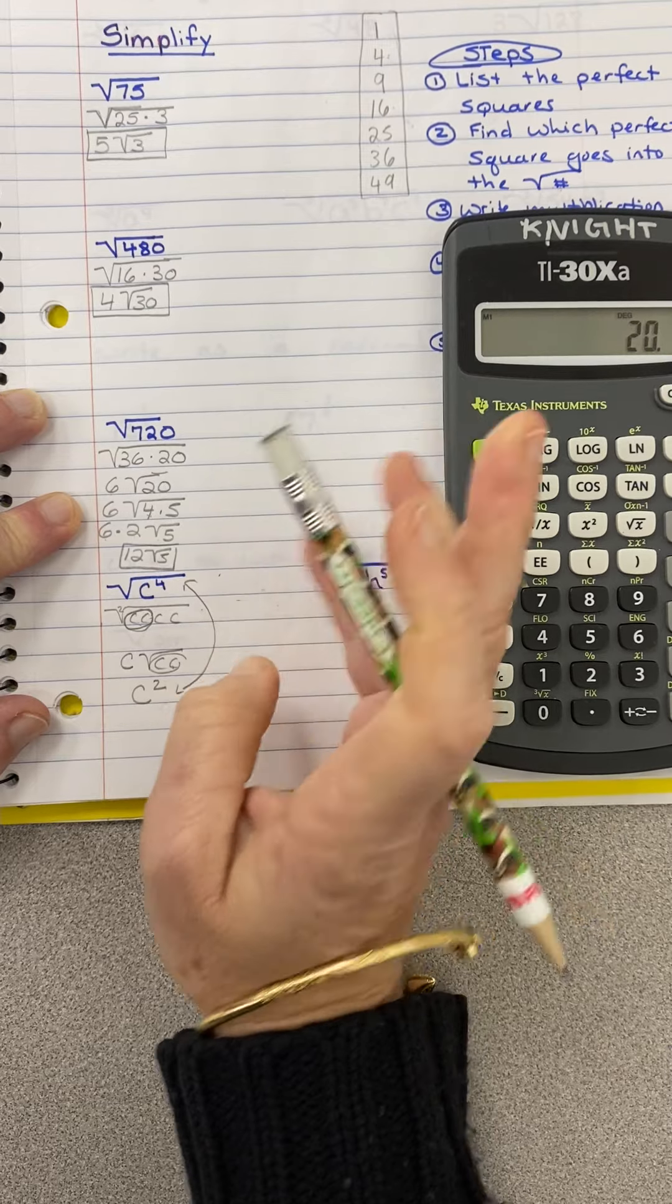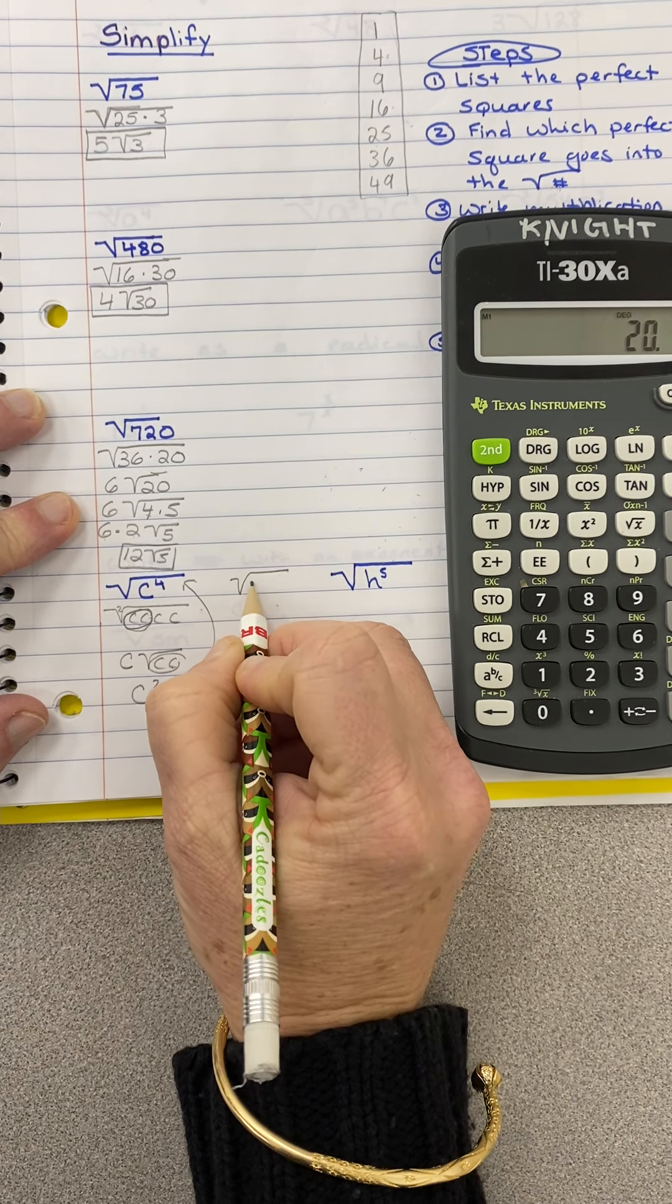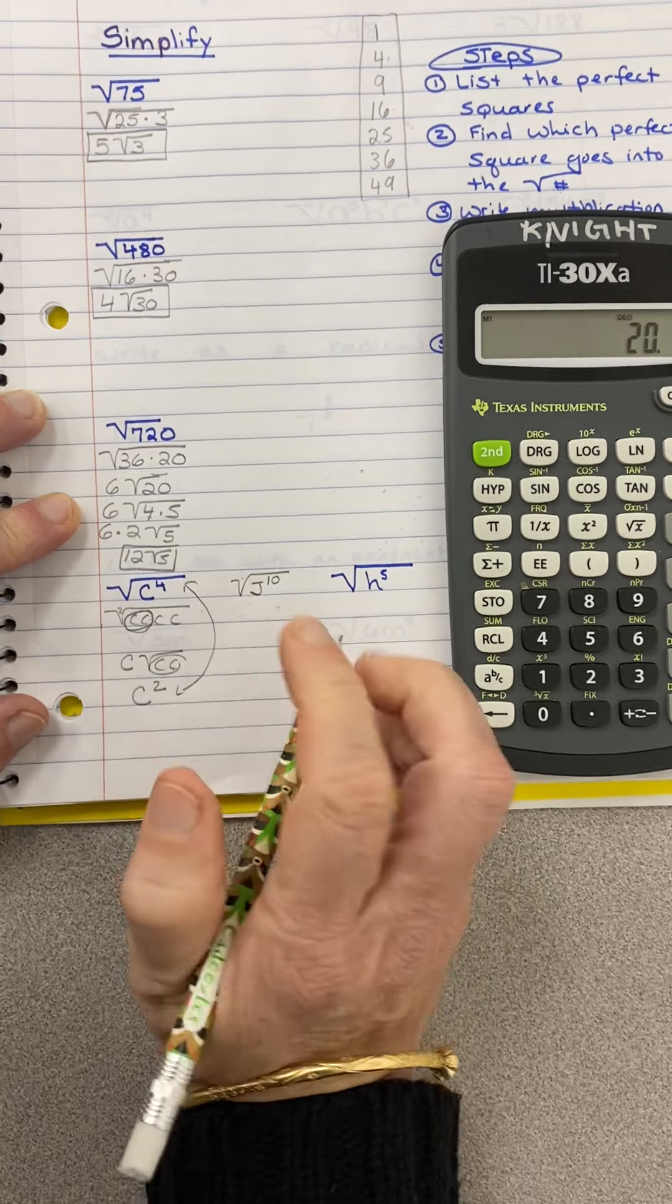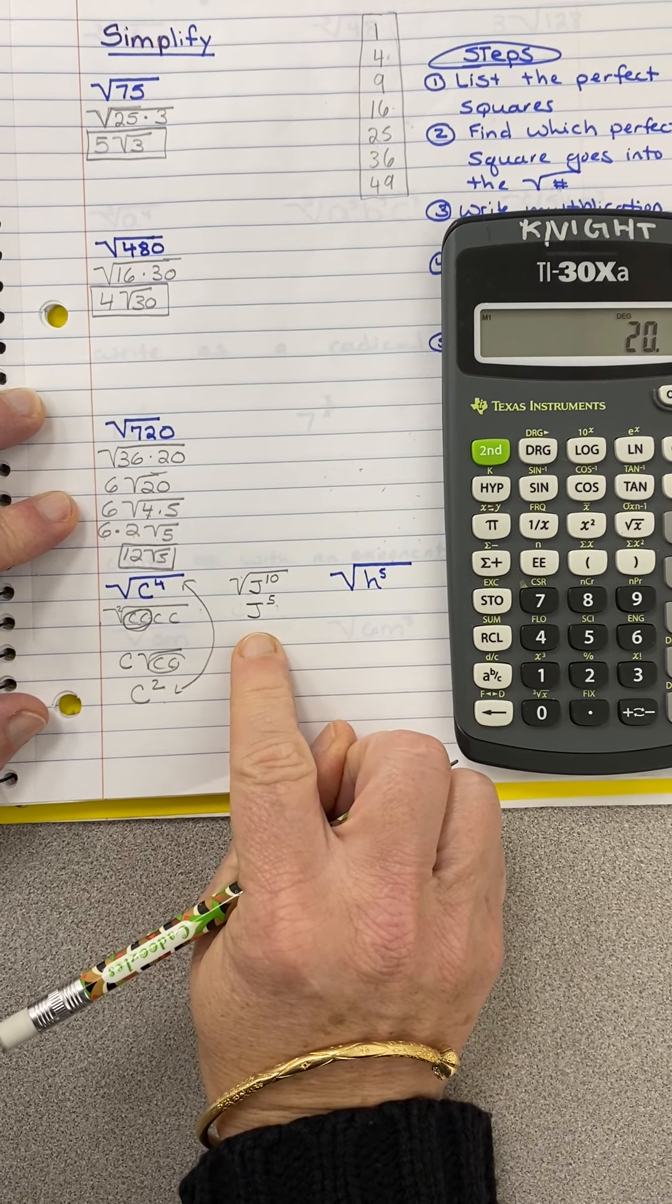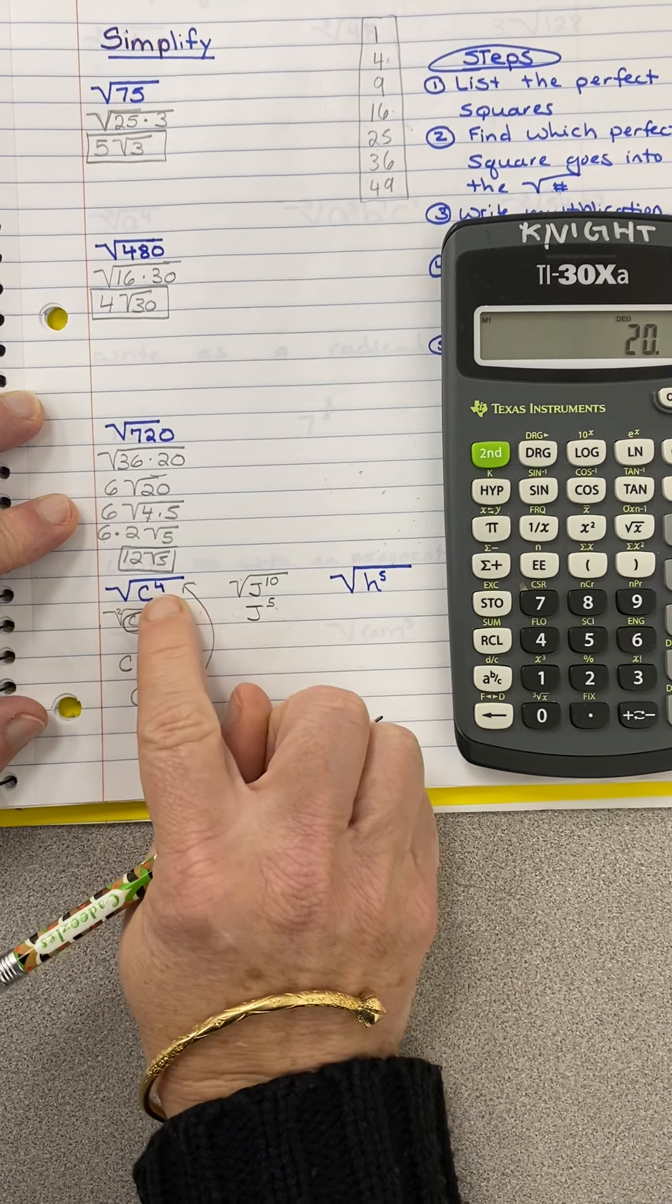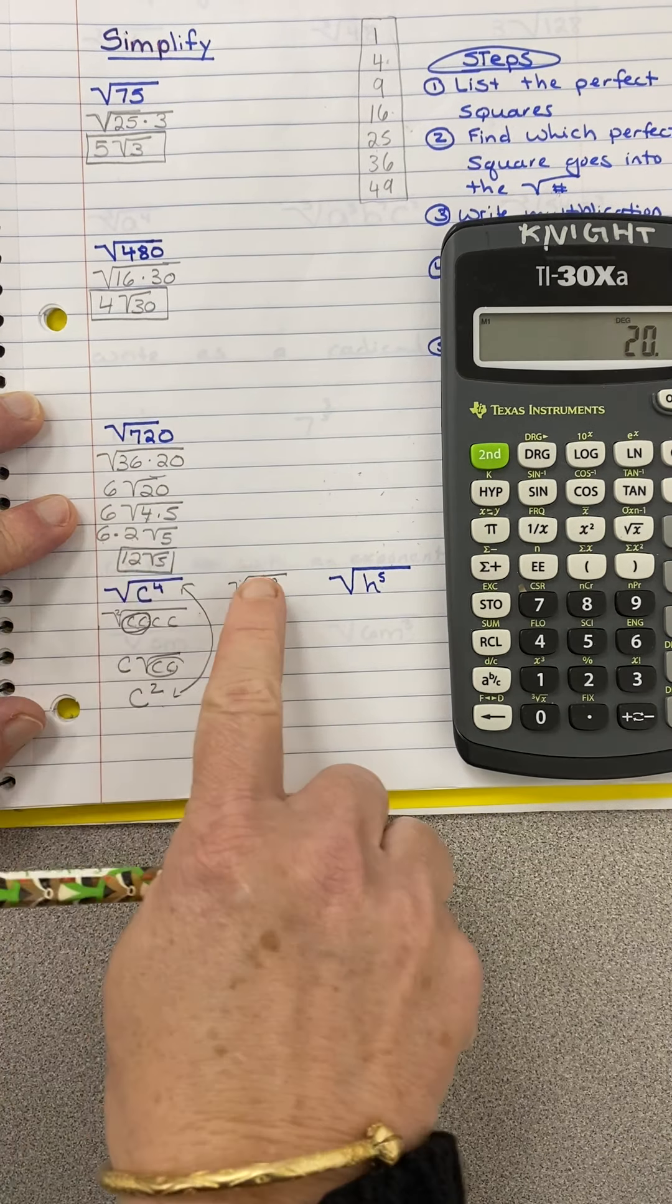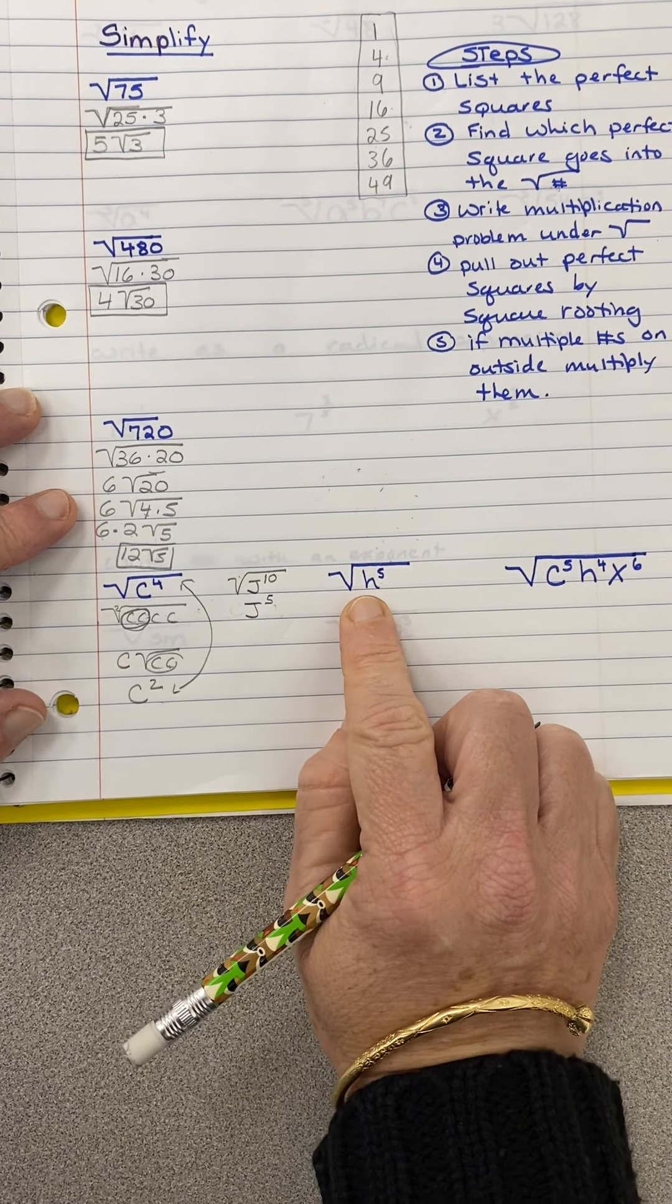Similarly, if we had the square root of J to the 10th, well then you'd say wait a second, because this is a square root, I have 5 Js. So I can just go ahead and cut it in half and say that's J to the 5th. So these even exponents are really nice and easy if you're square rooting because you're just basically cutting them in 2. Now remember, that's different with the numbers. This is only exponents.